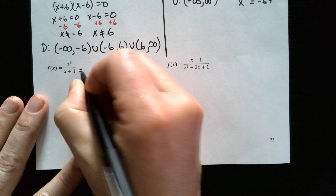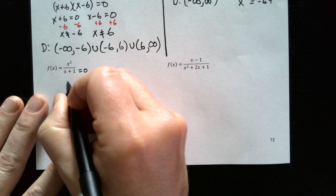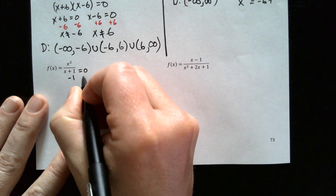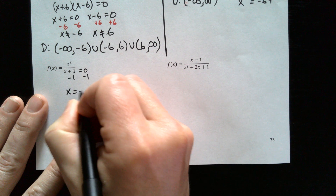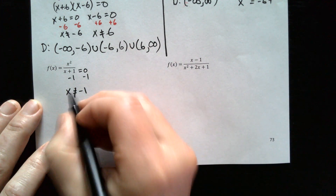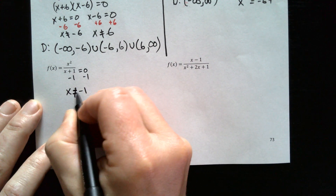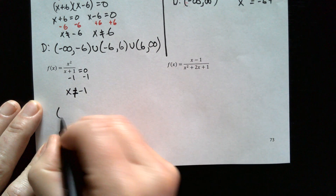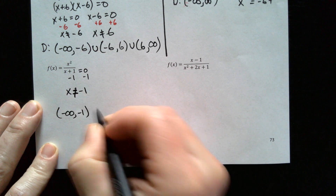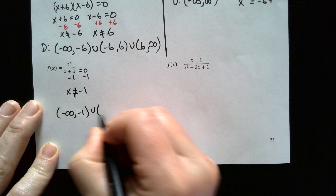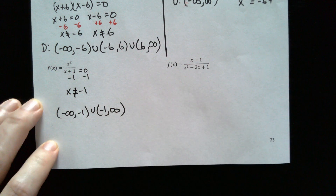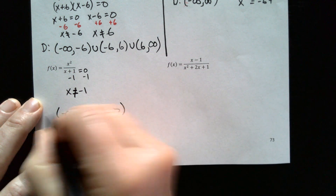On this one it looks pretty easy. We just say x plus 1 equals zero, subtract 1, and get x equals negative 1. So the only value being thrown out is negative 1. The domain goes from negative infinity to negative 1, and then from negative 1 to infinity.